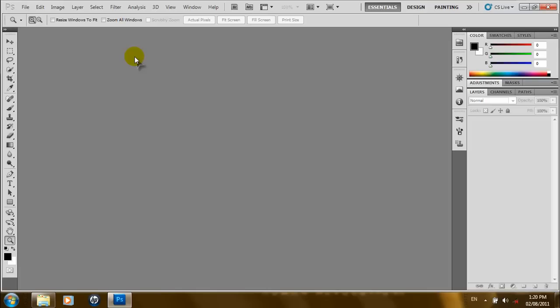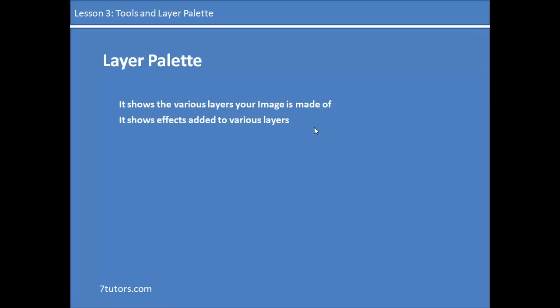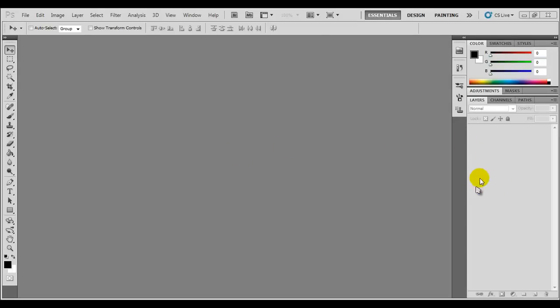Next, we'll be looking at the layer palette and how we can have multiple layers in it. The layer palette is located on the right side of our screen. If you're working on an image with multiple layers, depending on the effect you're going for, it provides a window that shows us the various layers your image is made of. We create multiple layers to give a certain depth or 3D effect to our image. It also shows a drop-down menu of the effects that a particular layer has, making our work easier when it comes to image editing.